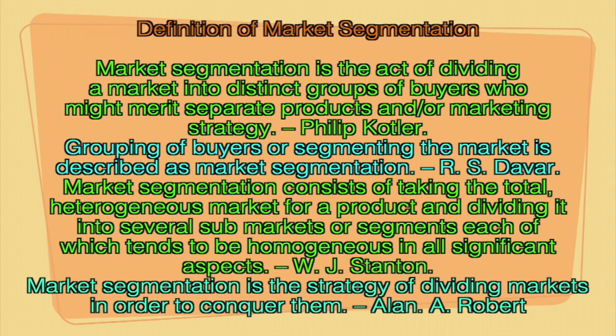According to R.S. Dhabar, grouping of buyers or segmenting the market is described as market segmentation — as simple as grouping buyers and dividing the market into segments. According to W.G.L. Stanton, market segmentation consists of taking the total heterogeneous market for a product and dividing it into several sub-markets or segments, each of which tends to be homogeneous in all significant aspects. Despite heterogeneity, a market will show certain homogeneous characteristics, and segmentation is identifying those homogeneous sub-segments.